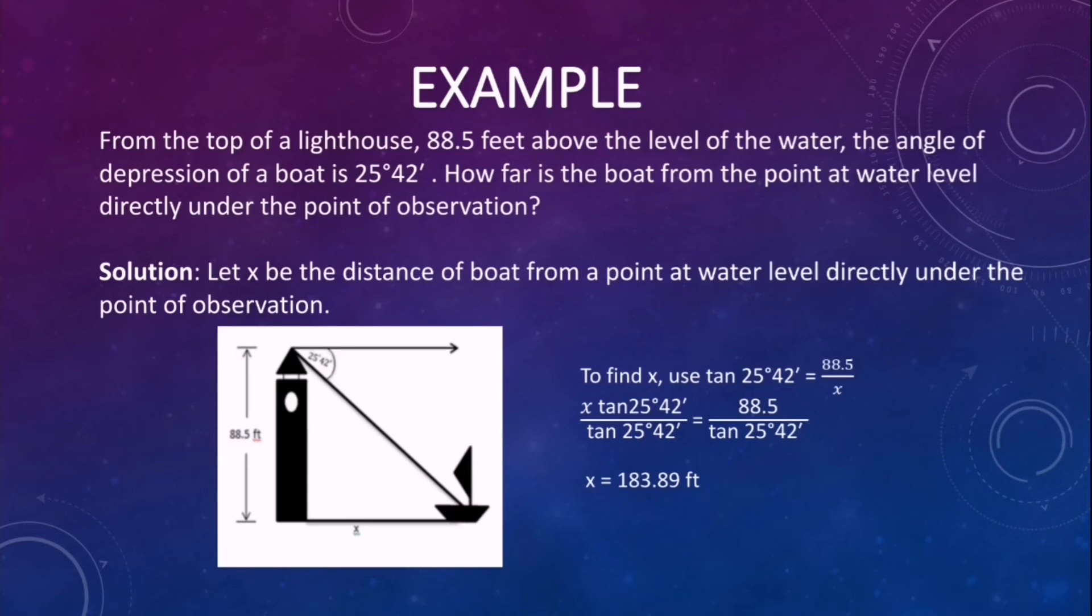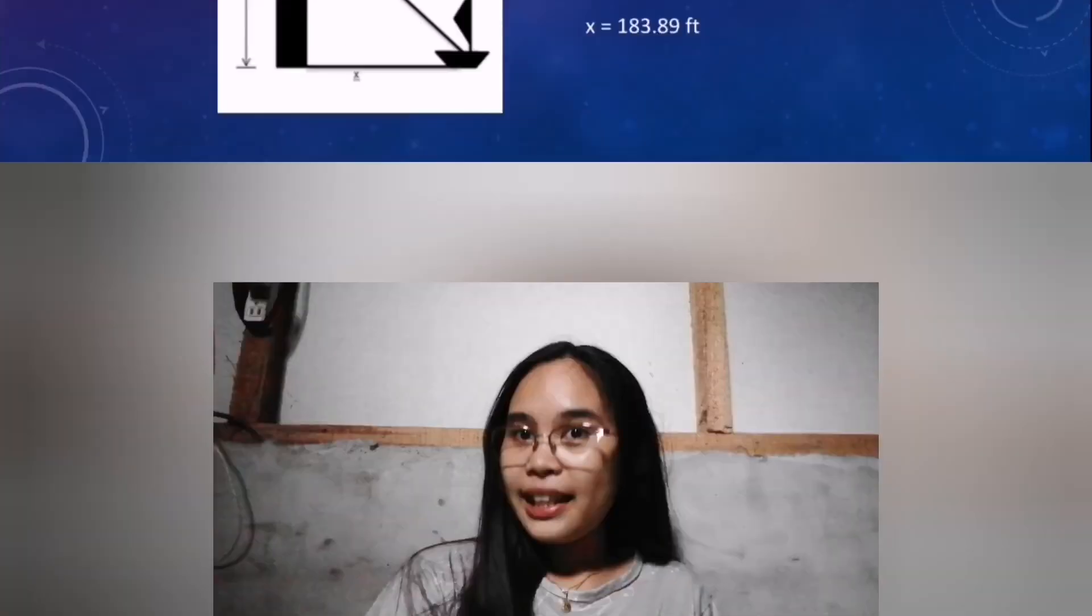So in finding the angle of depression, you just need to utilize this formula: tan equals opposite over adjacent. You just need to substitute the values and then perform basic operations to find the missing points or missing degrees and distances.